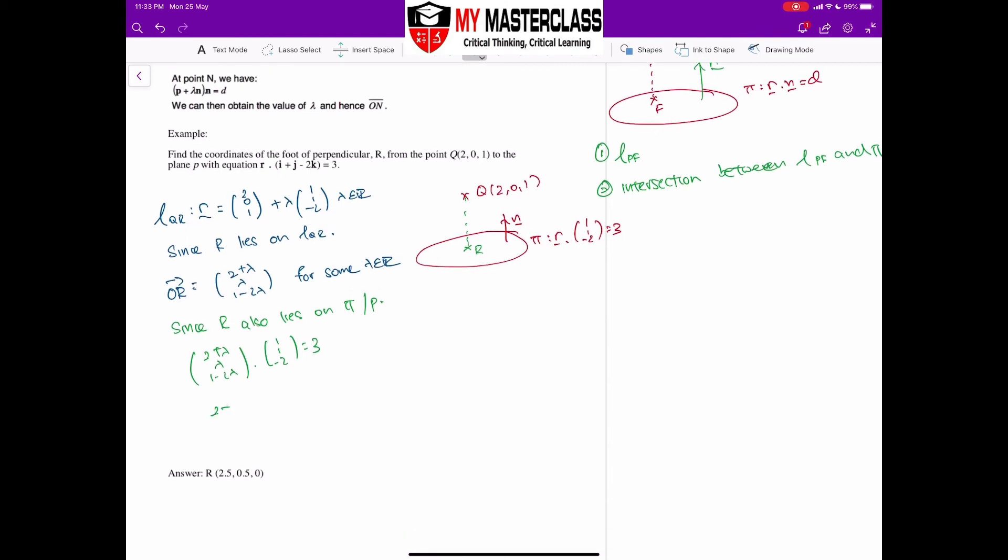So from here, I quickly expand out. So 2+λ+λ-2+4λ will be equal to 3. First off, 6λ will then be equal to 3, λ is equal to half.